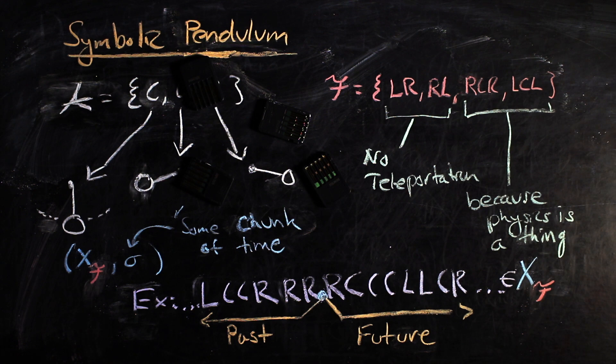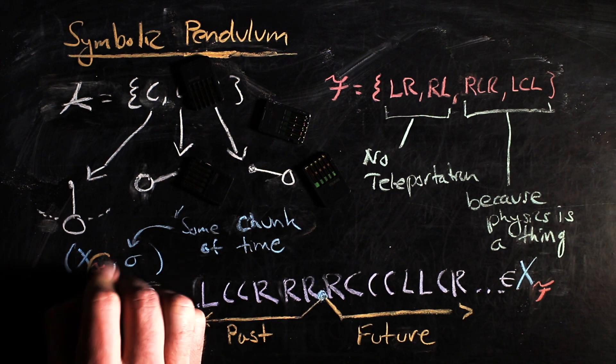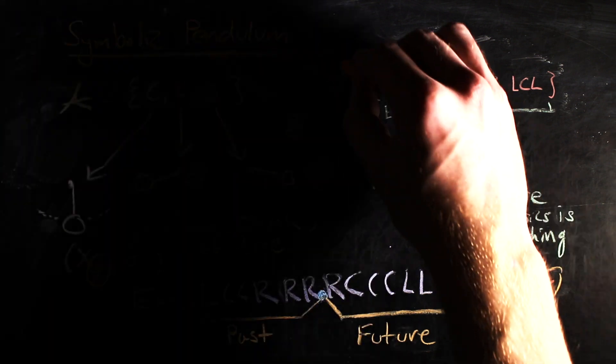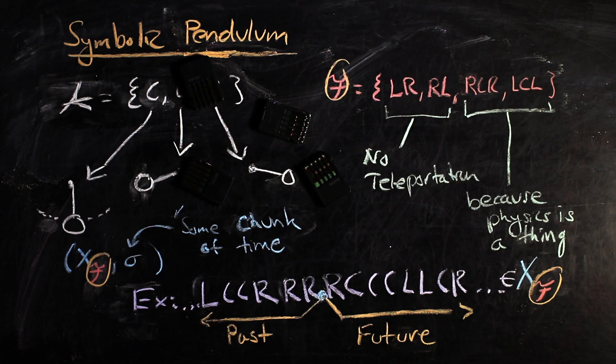This system, like all shift spaces, is generated by some forbidden words list. However, it is sometimes very difficult to give the complete forbidden words list, as it may be countably infinite and also have some level of irregularity to it.